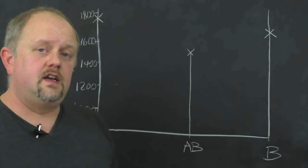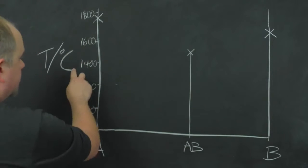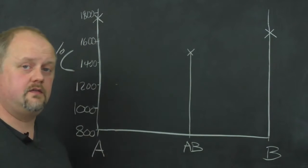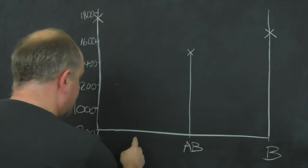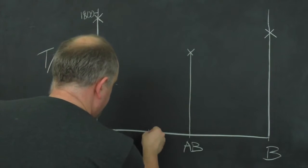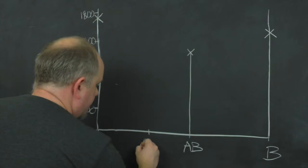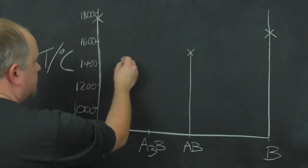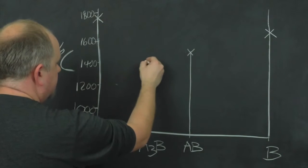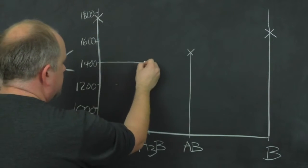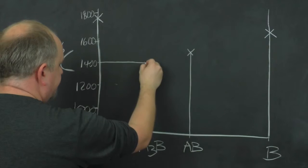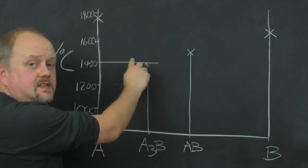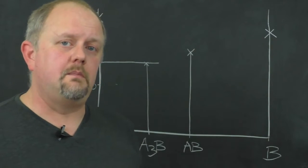We then know that we've got another phase, A3B, which melts incongruently at 1400. So A3B is 25% B, 75% A, so it should be about here. So A3B, and that melts incongruently at 1400. So we know it's going to look something like that. So we've got this classic T shape from an incongruently melting phase.